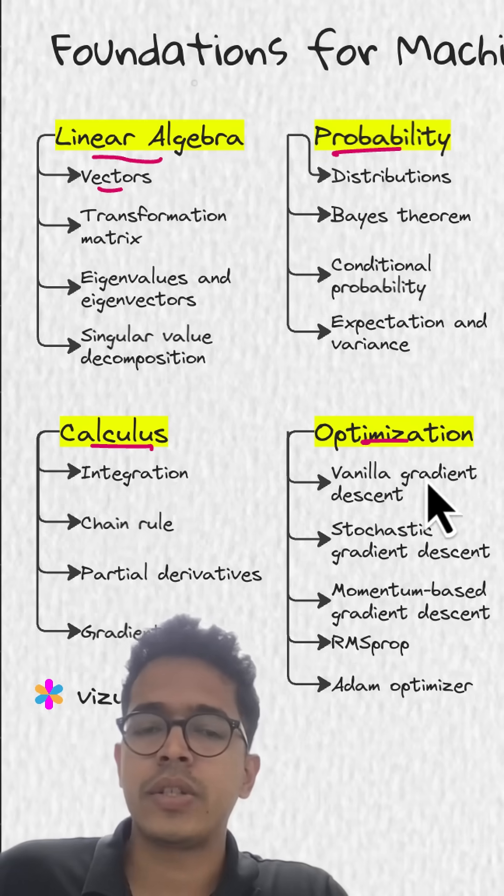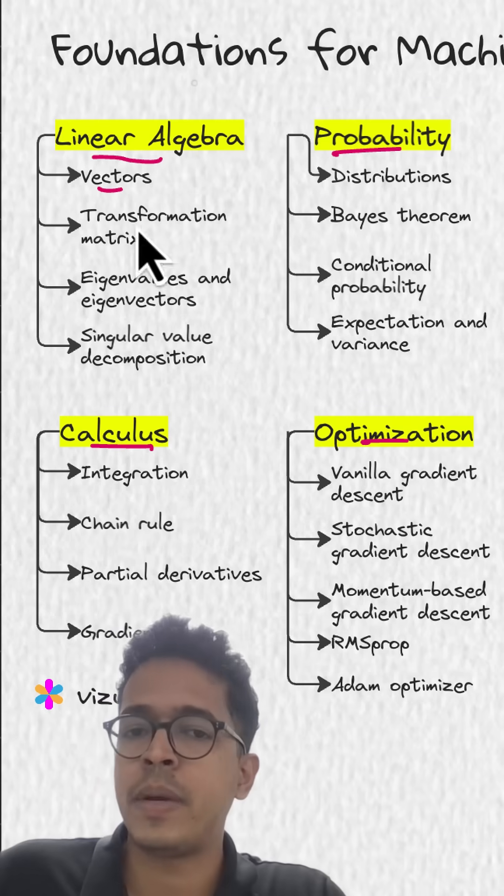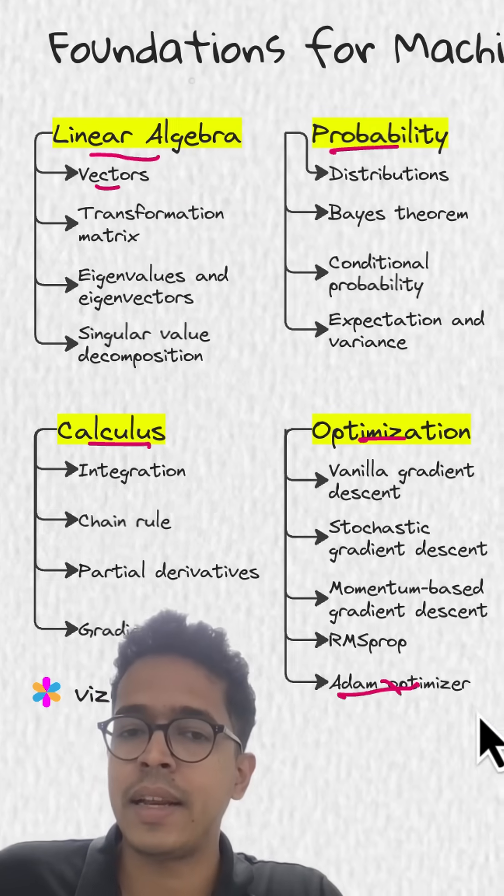In optimization, focus on vanilla gradient descent, stochastic gradient descent, momentum-based gradient descent, root-mean-square propagation, and Adam optimizer, which is the most important optimization technique in machine learning.